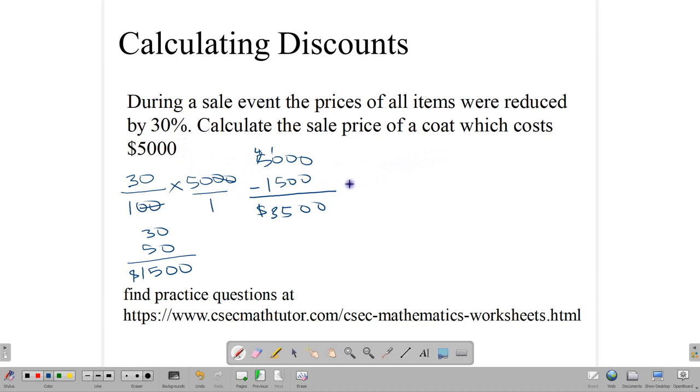Alternately, again, you could start off with your 100% and minus 30% from that. And therefore, we're going to multiply it by $5,000, which in essence means that you're going to be finding 100 minus 30. You're going to be finding 70% of the price. So 70 over 100 times $5,000. We do our division there. And so we end up with 70 times 50, which gives you $3,500.